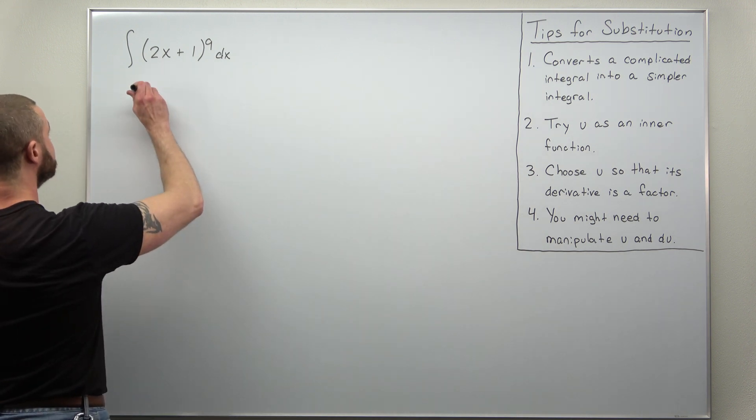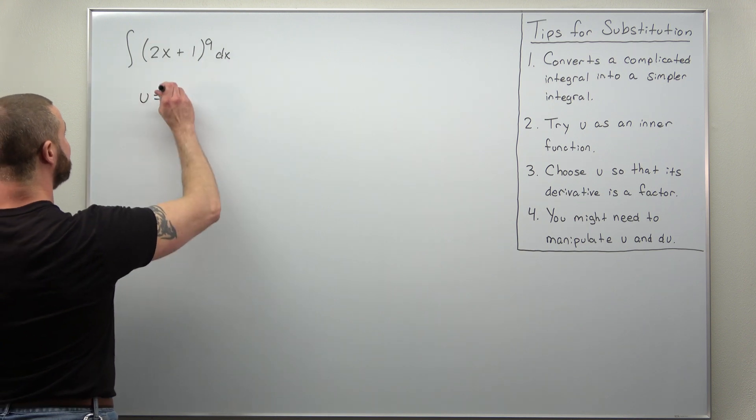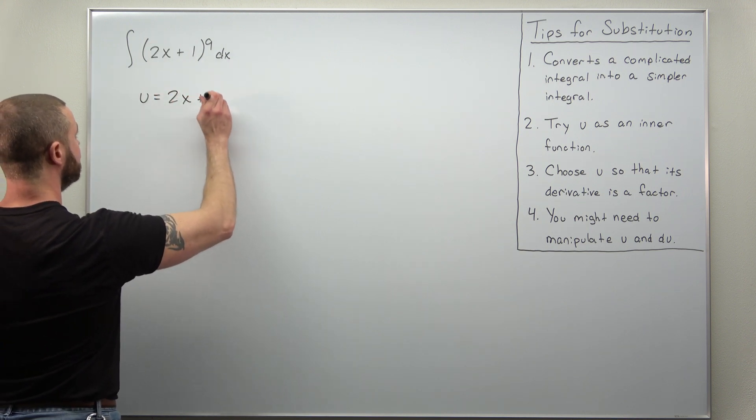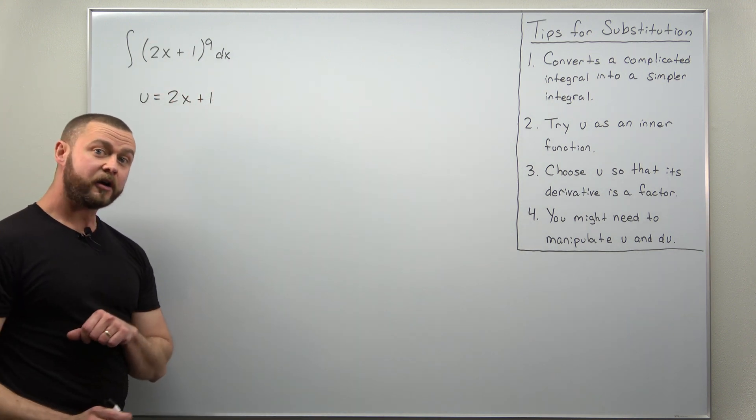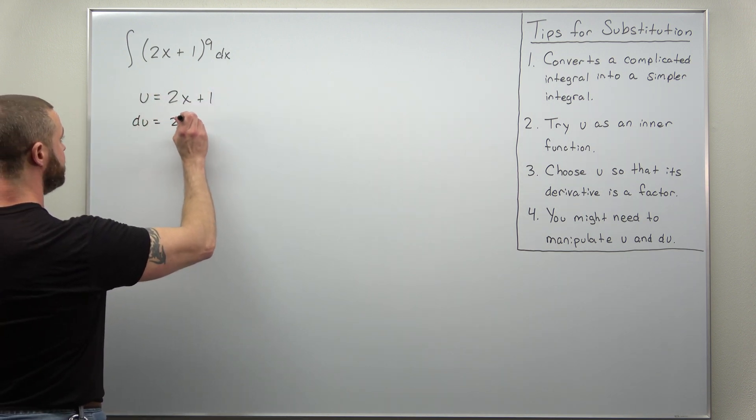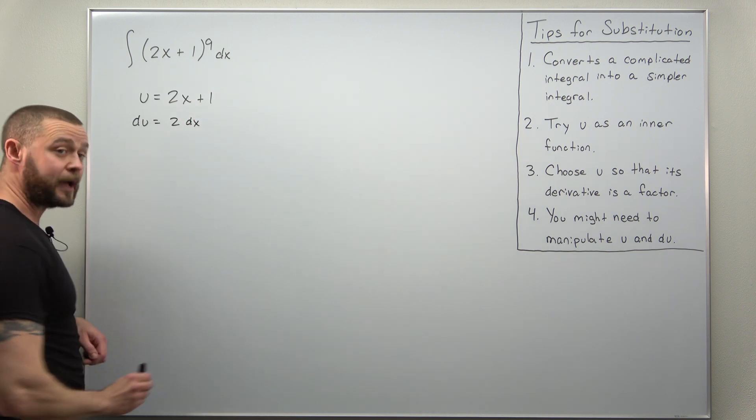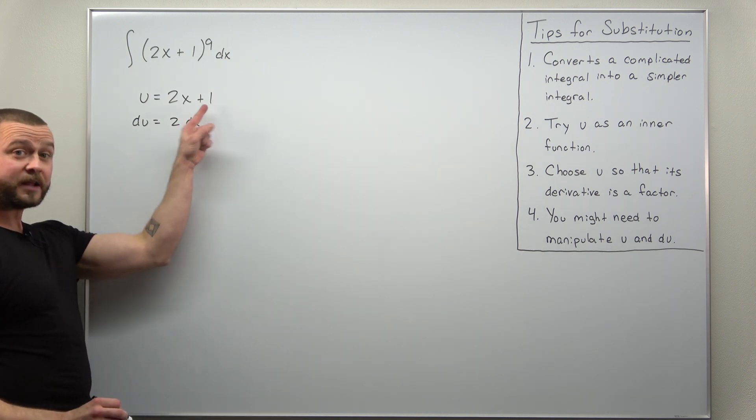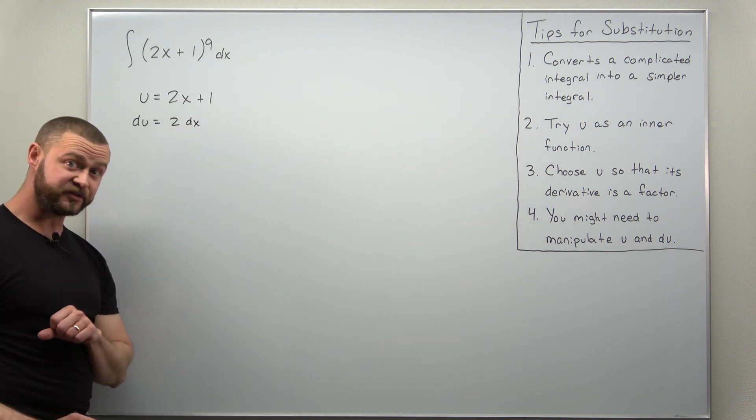So let's try u as the inside, 2x plus 1. We calculate our differential du. We take the derivative there to get 2 times dx, and remember here 1 is a constant that differentiates to 0.